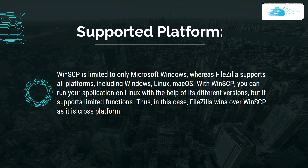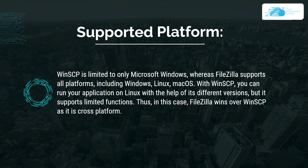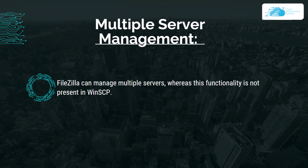Next: supported platforms. WinSCP is limited to Microsoft Windows, whereas FileZilla supports all platforms including Windows, Linux, and macOS. With WinSCP you can run your application on Linux through a different version, but it supports limited functionality. Therefore FileZilla wins over WinSCP as a cross-platform application. After that: multiple server management. FileZilla can manage multiple servers, while this functionality is not present in WinSCP — so FileZilla is the clear winner in this category.